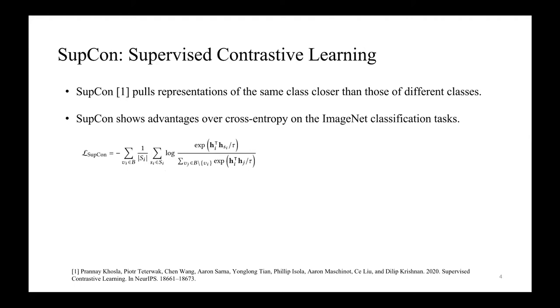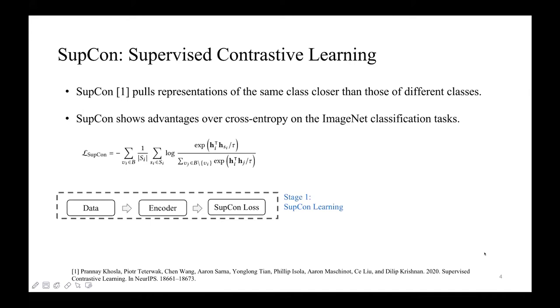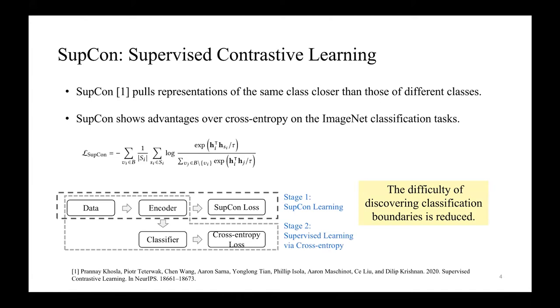This loss function is proposed recently in supervised domain and shows advantages over cross entropy on the ImageNet classification tasks. Here, we call it SupCon loss. SupCon loss is inspired by the InfoNCE loss and targets to pull representations of the same class closer and those of different classes farther. SupCon loss works under a two-stage training scheme. In the first stage, it employs SupCon loss to optimize the encoder so that the difficulty of discovering classification boundaries can be reduced. Then, based on the learned encoder, the second stage uses cross entropy loss to optimize the classifier. In our work, we suggest to optimize both the encoder and the classifier in the second stage.